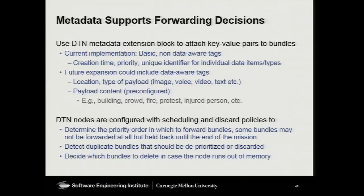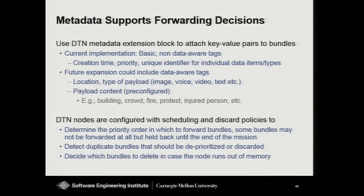The DTN metadata extension blocks allow you to attach metadata to your messages, which in the DTN world are called bundles. We attach a set of key-value pairs — things like creation time, message priority, and an identifier for which data stream the message belongs to. We haven't implemented it yet, but potentially we could include location and semantic information about messages, like 'here's a picture of a fire' or 'here's a picture of a riot.' On the DTN nodes, they process this metadata to make scheduling and discarding decisions. If I have a disconnection and my queue is building up, I can decide which messages are most important to send first, or which ones should be dropped.